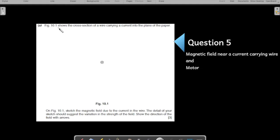So let us understand what is happening in the question. The figure here shows the cross section of the wire carrying a current into the plane of the paper. So this dot that you see here, the circle with the X mark. The circle with the X mark usually denotes that the wire is entering the paper.